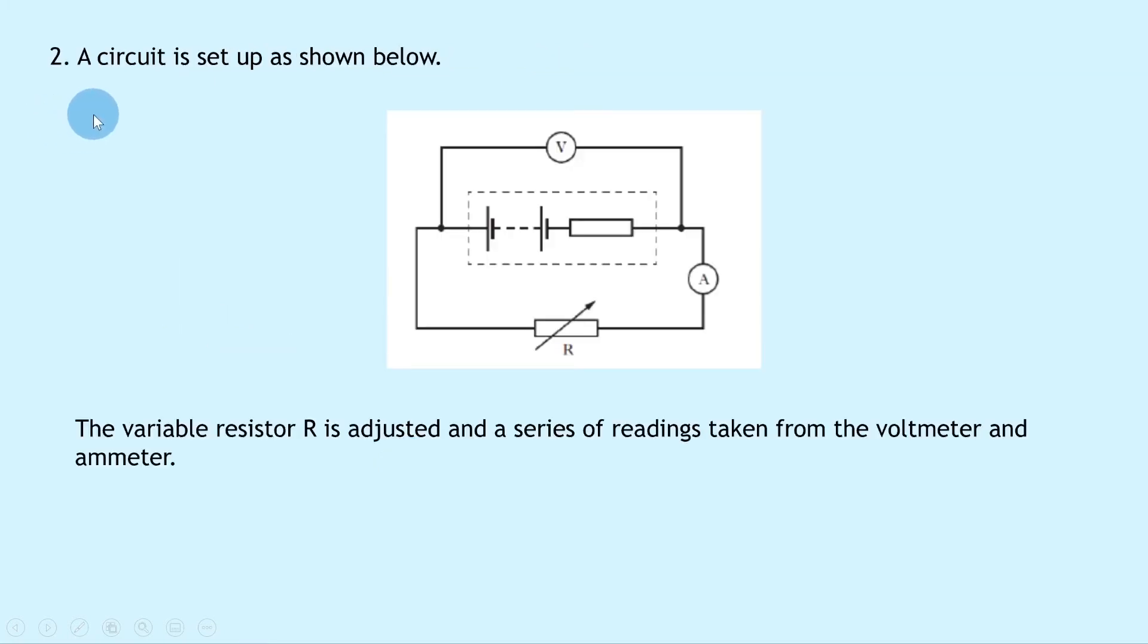Lastly, question two says that a circuit is set up as shown below. So we've got a voltmeter in parallel with our battery with its internal resistance, and the dashed box line to enclose those. We've then got an ammeter in series with a variable resistor. It then says the variable resistor r is adjusted and a series of readings taken from the voltmeter and ammeter.